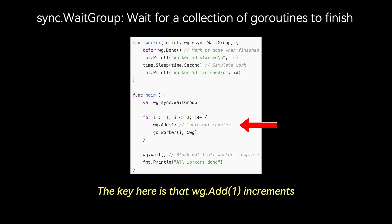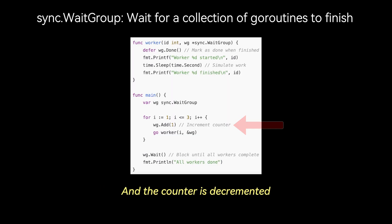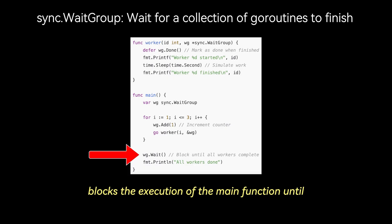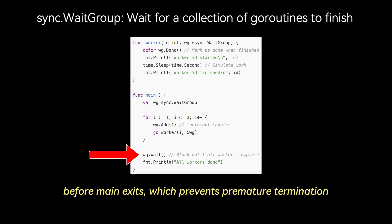The key is that WaitGroup.Add(1) increments the counter before launching each goroutine, and the counter is decremented when the goroutine completes. The call to WaitGroup.Wait blocks the main function until all goroutines finish — essentially when the counter hits zero — ensuring all workers complete before main exits, preventing premature termination.